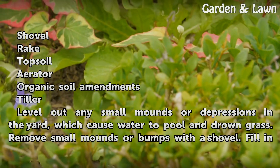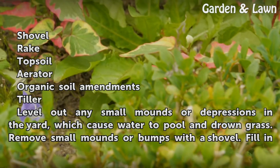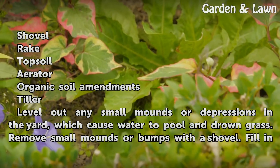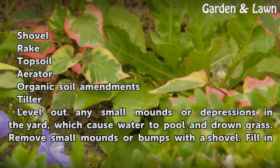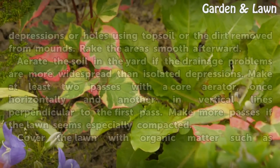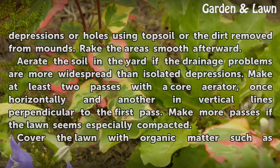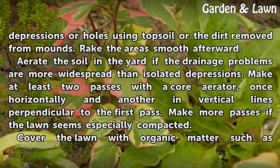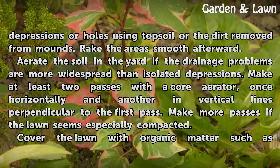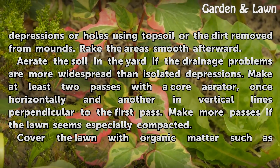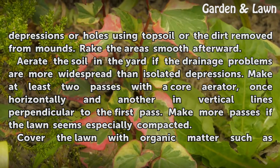Level out any small mounds or depressions in the yard, which cause water to pool and drown grass. Remove small mounds or bumps with a shovel. Fill in depressions or holes using topsoil or the dirt removed from mounds. Rake the areas smooth afterward.